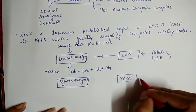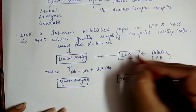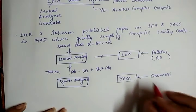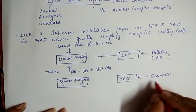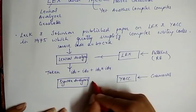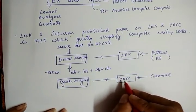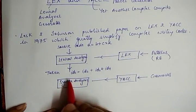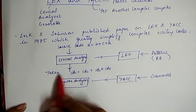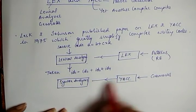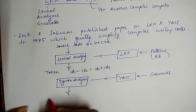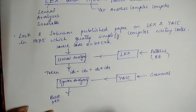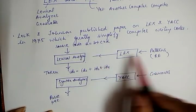Similarly, just as patterns are the input for Lex, grammar is the input for Yacc. The Yacc compiler generates output as a parser and passes it to the syntax analyzer. This phase then combines the tokens from Lex with the parse output from Yacc to produce a parse tree, which becomes the input to the next phase of the compiler.